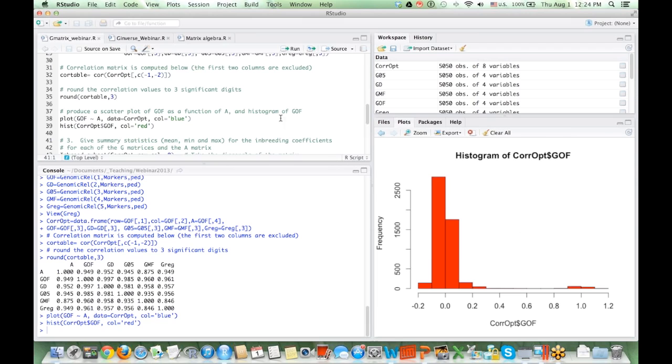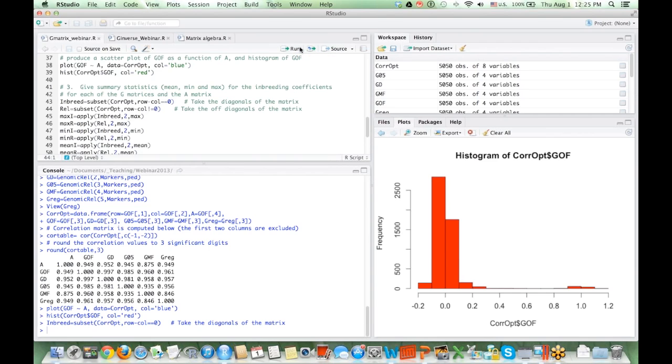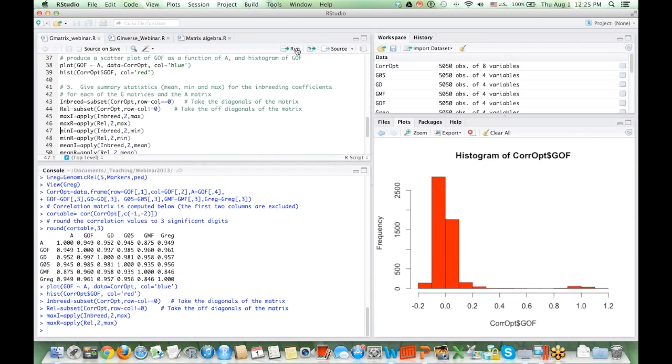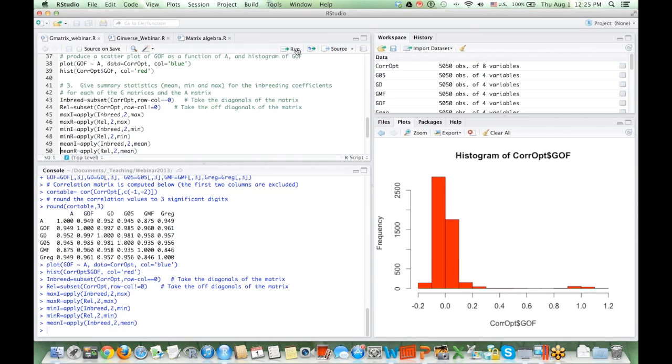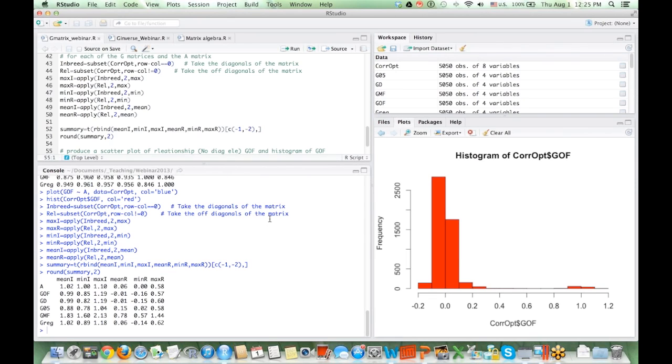And we can look at the distribution of the genomic relationship coefficients from GOF method based on observed allele frequencies. We can take the subset of the matrix or the data frame to look at the inbreeding and then the relationship coefficients, which are the off-diagonals. And then we can look at the maximum values, minimum values for each, and then the means. And then we can combine all those values, summary statistics, in one data frame and then visualize. Mean I is the average inbreeding, and mean R is the average coefficient.